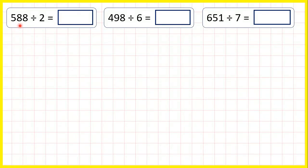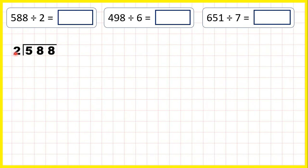Now let's divide a three-digit number by a single-digit number using expanded division. We can write out 588 divided by 2 with our divisor on the left. Now we take the first digit and we have 5 divided by 2. So we need a number in the 2 times table that's as close to 5 as possible but still less than 5.